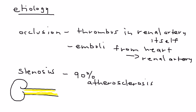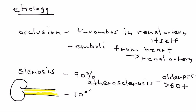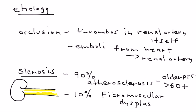When you think of atherosclerosis on clinical vignettes, think of older patients — we're talking about patients that are 60 years or greater. That's a clue to differentiate them from the other 10% of patients with stenosis, who get stenosis because of something called fibromuscular dysplasia. This is a commonly tested item, even though it's only 10%.